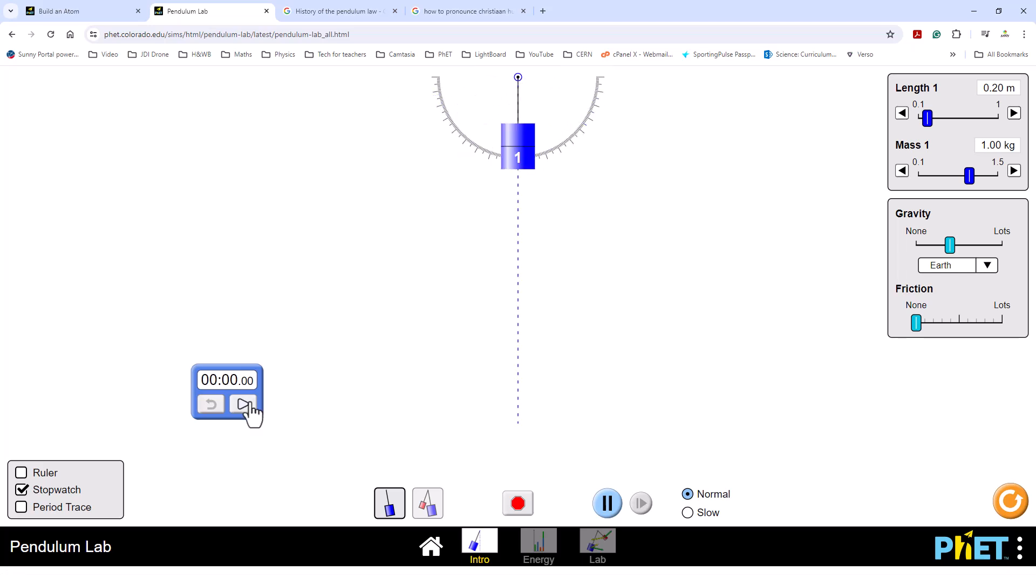You'll note in this experiment the dependent variable is the time it takes for the oscillation and the independent variable is the length of the string. Everything else has been controlled: the mass of the pendulum, the starting angle, the gravity of the earth, and the friction of the system. Let's now examine this data using Excel.